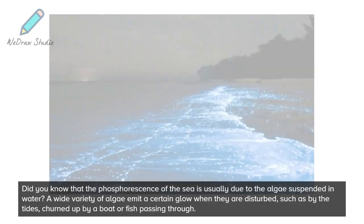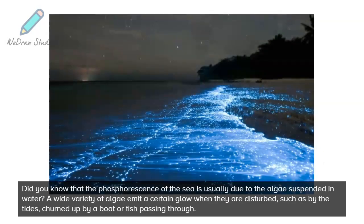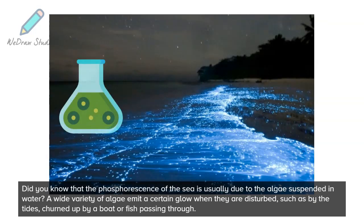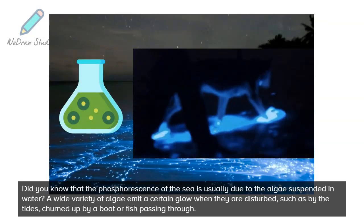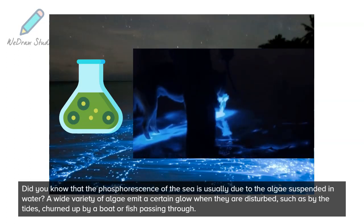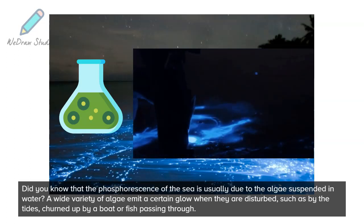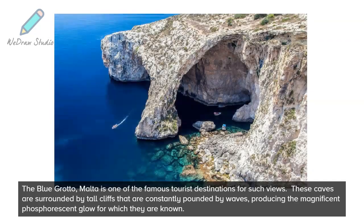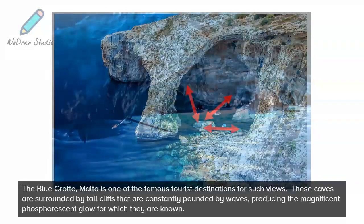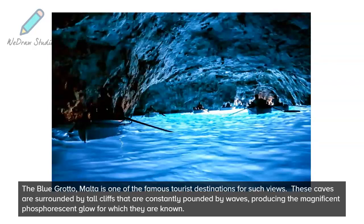Did you know that the phosphorescence of the sea is usually due to algae suspended in water? A wide variety of algae emit a certain glow when they are disturbed, such as by the tides, churned up by a boat or fish passing through. The Blue Grotto in Malta is one of the famous tourist destinations for such views. These caves are surrounded by tall cliffs that are constantly pounded by waves, producing the magnificent phosphorescent glow for which they are known.